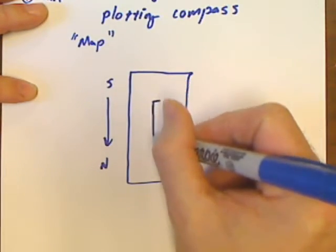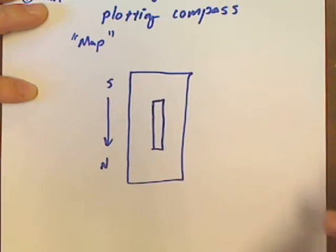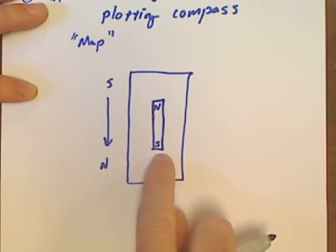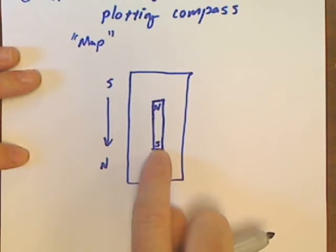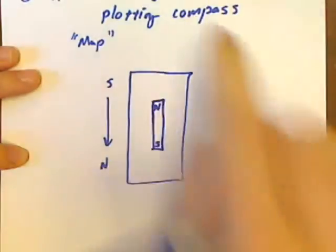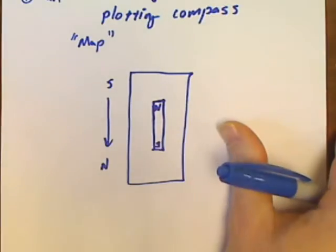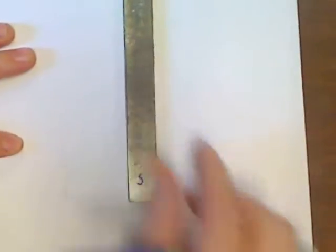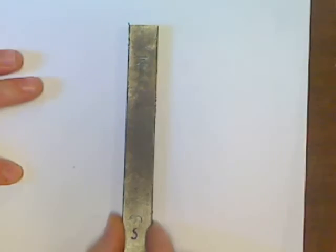I'm gonna take a single bar magnet and lay it in the center of that sheet of paper. I'm laying it so that the south end of the magnet is actually facing north and the north end of the magnet is facing south. So here's my long sheet of paper and in the dead center of it I'm gonna lay down a magnet.